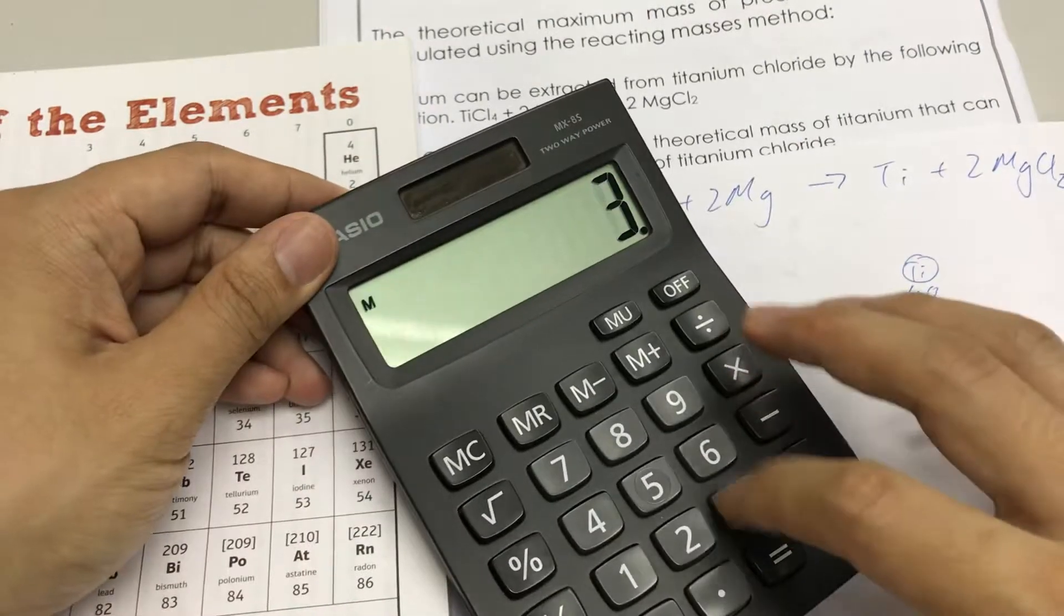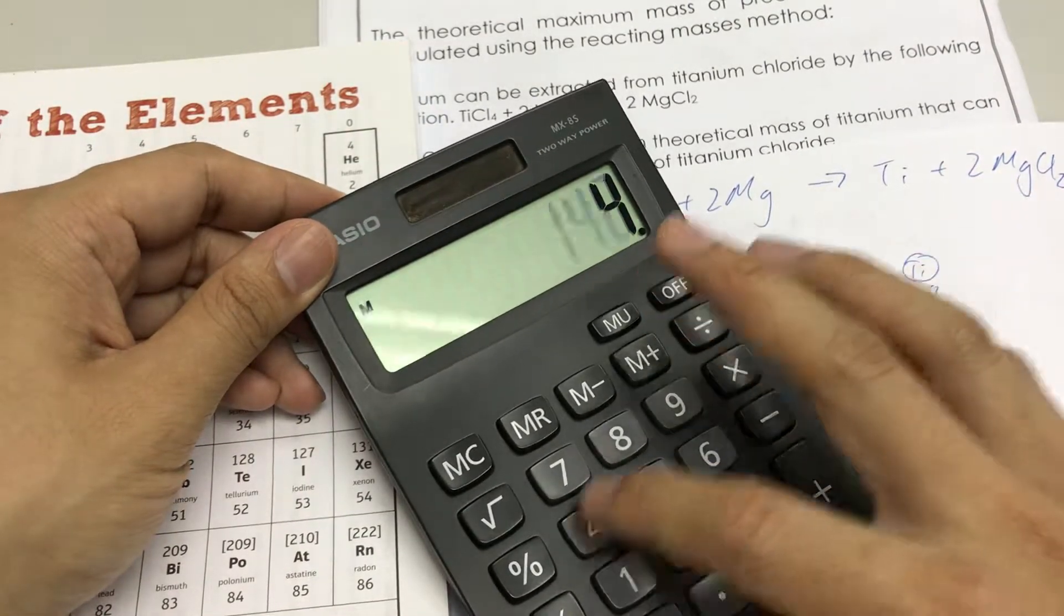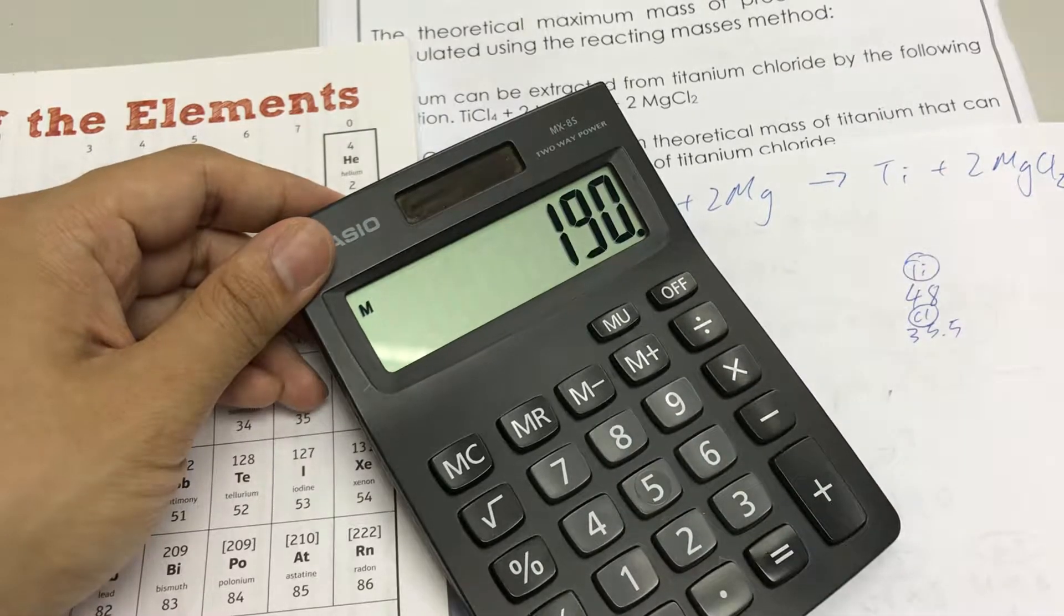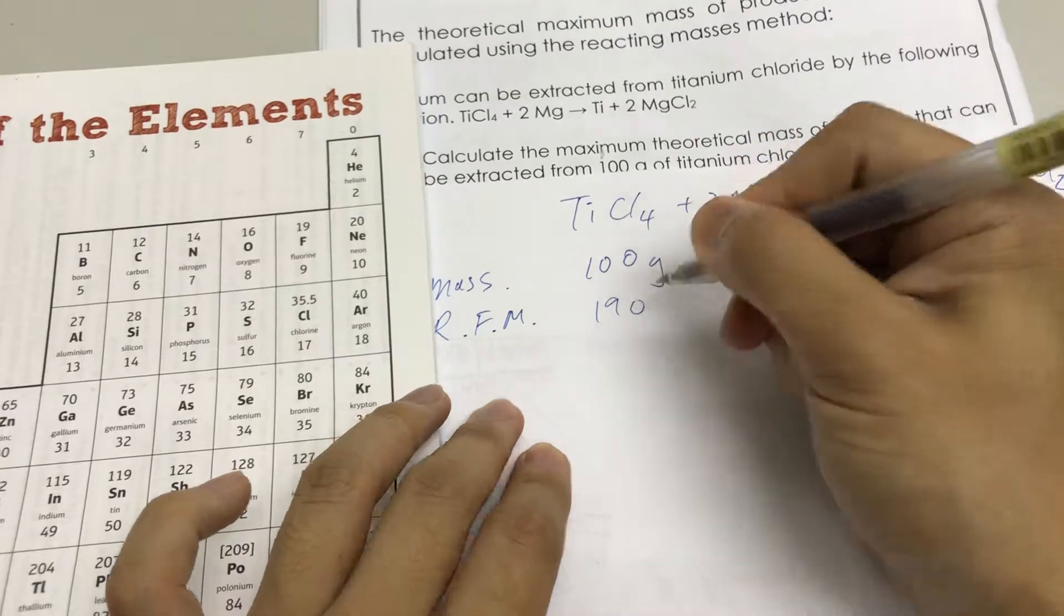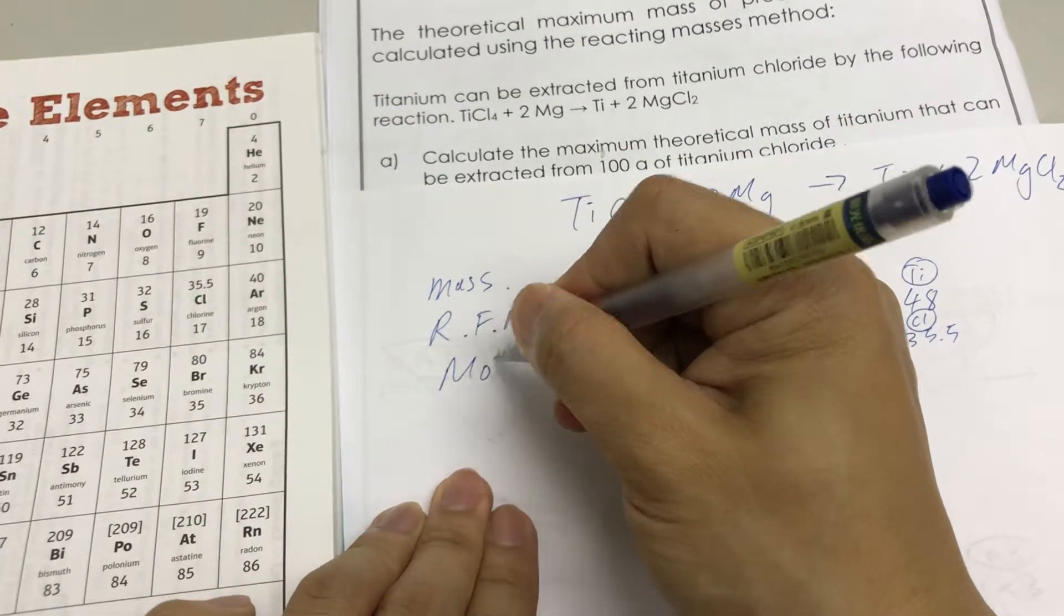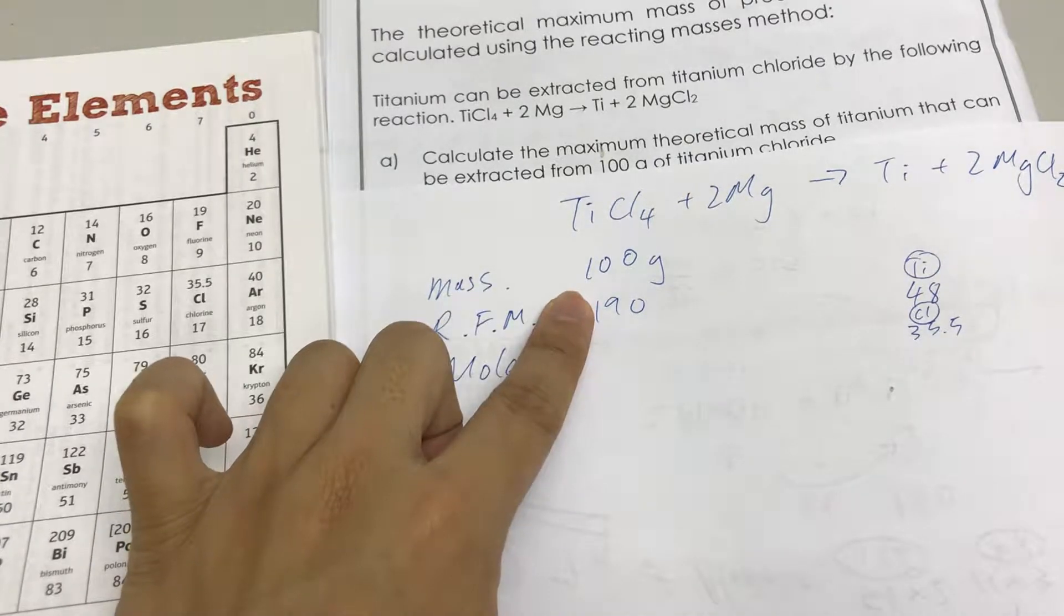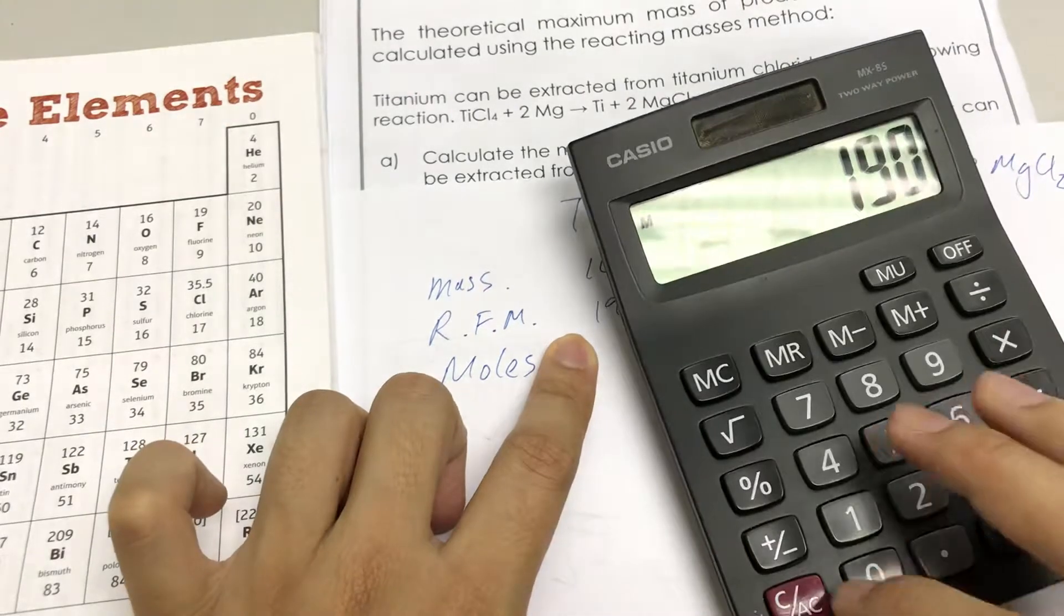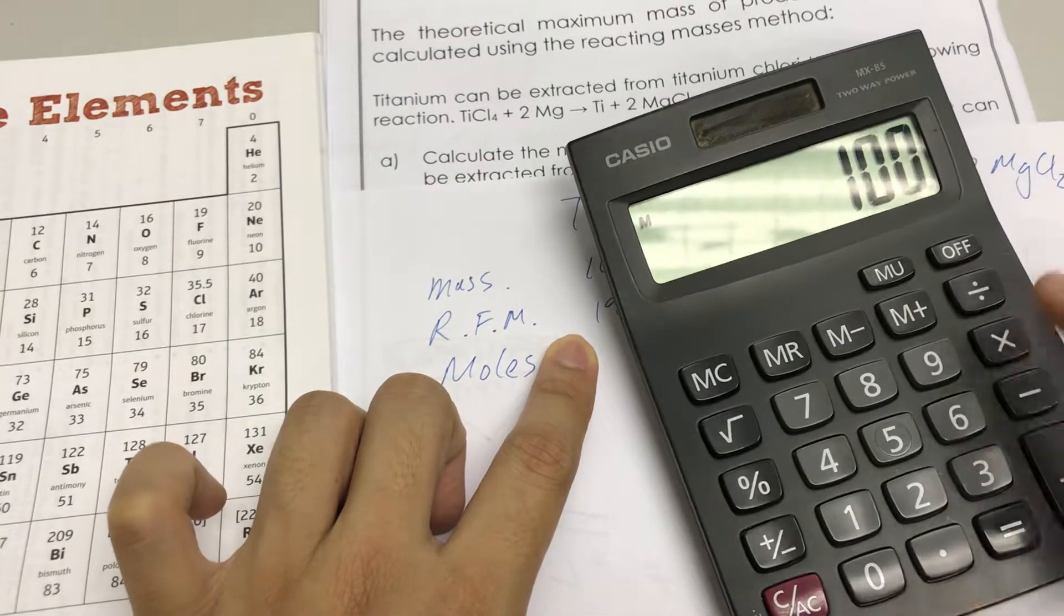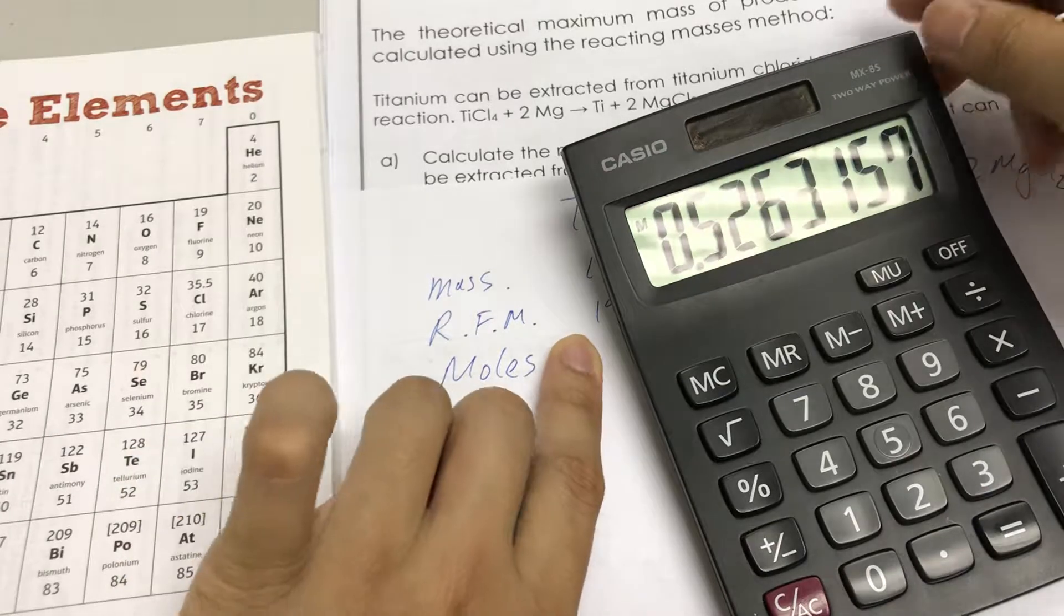We can now calculate the moles. The moles will be the mass divided by the molar mass, so 100 divided by 190. This is the approximate number, 0.526.